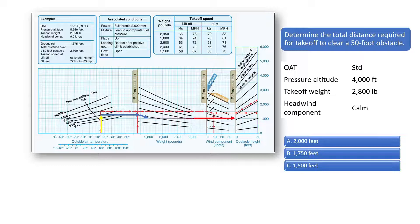Then draw a line over to the right to the obstacle height section, as illustrated by the red arrow. The wind is calm, so we don't need to make an adjustment. If there was a headwind, we would draw a line downward, and if there was a tailwind, we would draw a line upward as illustrated by the reference lines in the wind component section of the chart.